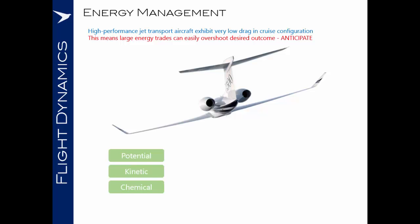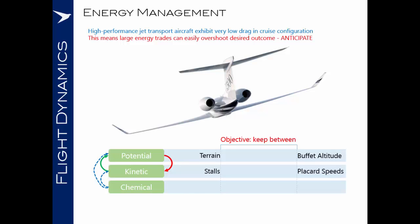Looking at our three types of energy, the chemical that we can convert into kinetic or potential energy, the kinetic energy which we can convert into potential energy by zooming, or the potential energy which we can convert to kinetic energy by diving. There are certain limits within which we seek to keep. First of all, for potential energy, we have the limits of the terrain below us, and buffered altitude, limiting altitude above us. For kinetic energy, we have to keep between the airplane in a stalled condition, and the placard speeds. For chemical energy, we simply have to keep away from empty tanks.